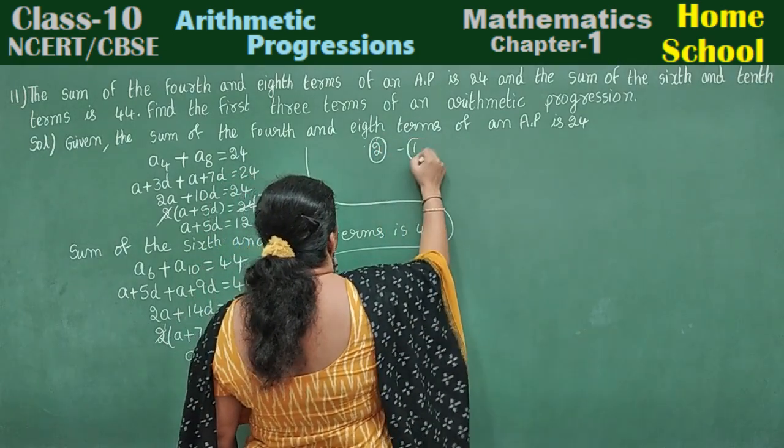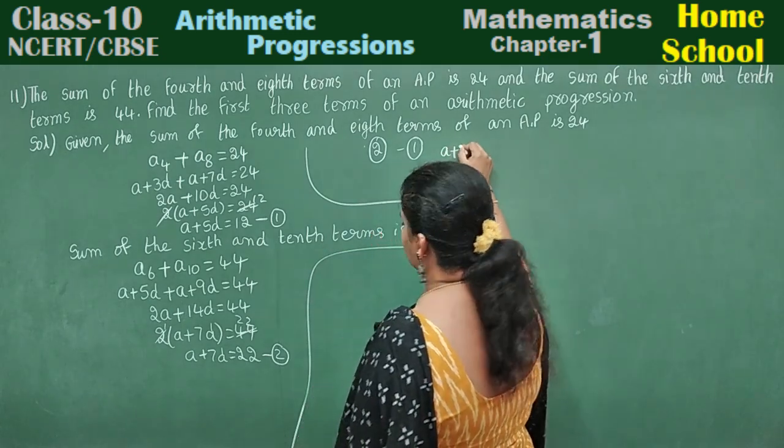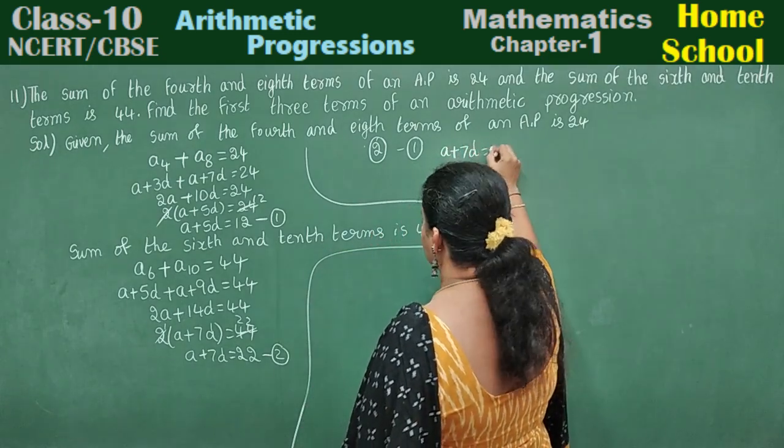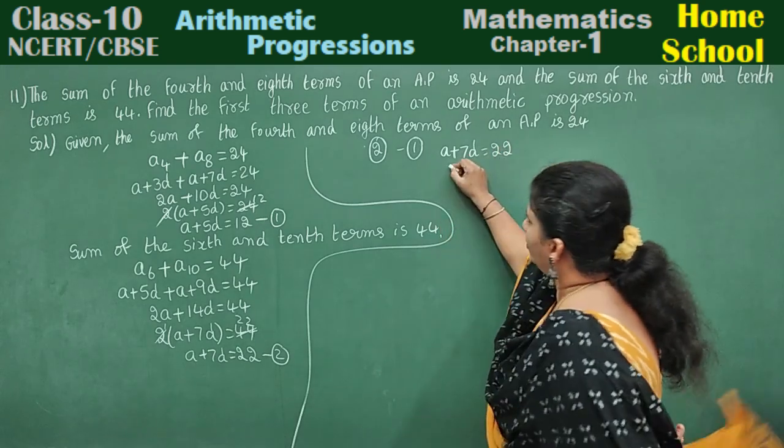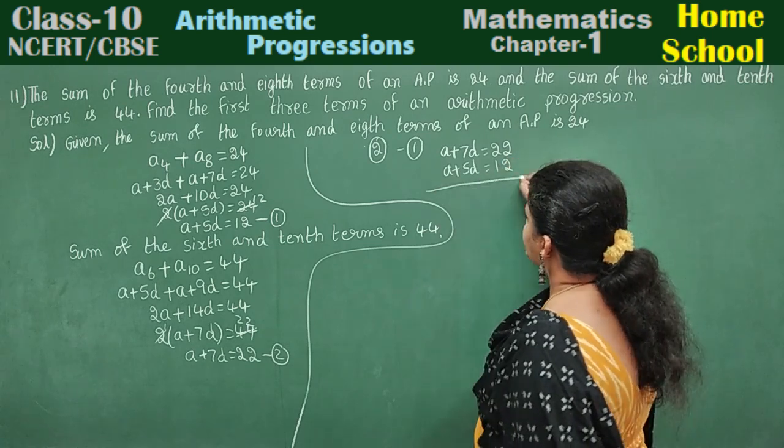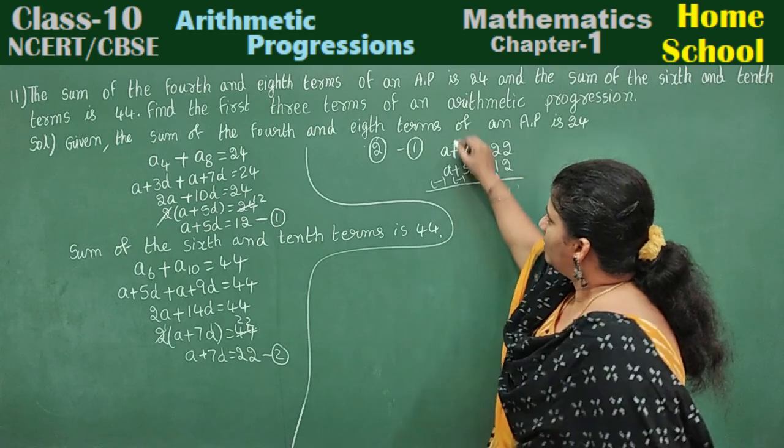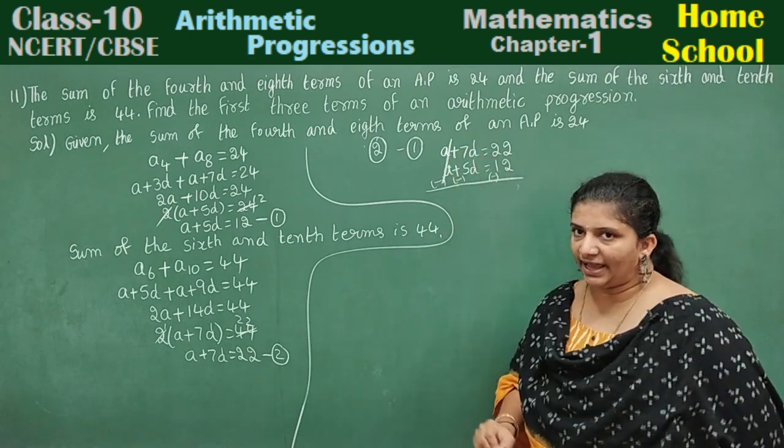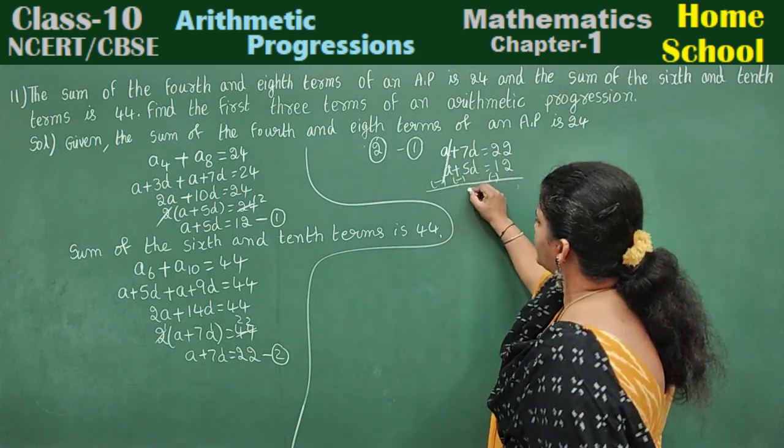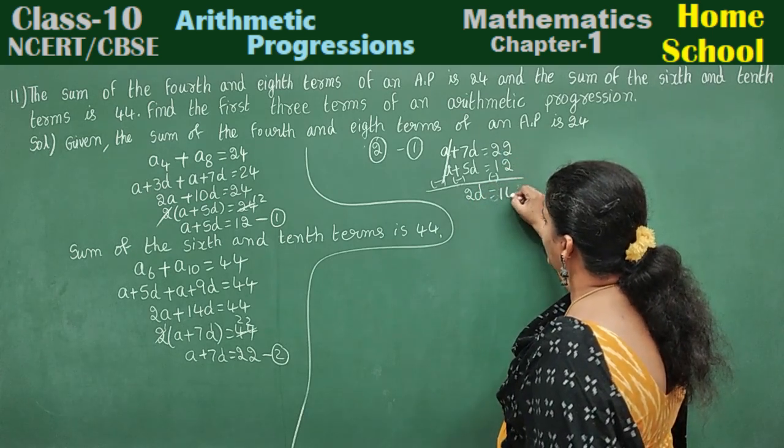Equation 2 minus equation 1: A plus 7D equals 22, minus A plus 5D equals 12. Subtract these two equations. A minus A will be cancelled. 7D minus 5D will be 2D. 22 minus 12 will be 10.